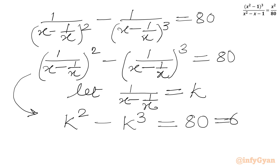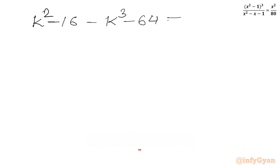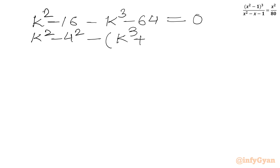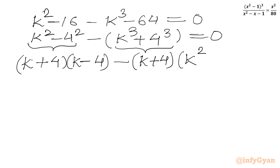I can split 8 as 4 plus... taking all terms to one side, I can write k squared minus 16 minus k cubed minus 64 equal to 0, which gives k squared minus 4 squared, minus the bracket k cubed plus 4 cubed, equal to 0. Now we apply two formulas: a squared minus b squared and a cubed plus b cubed. So I can write k plus 4 times k minus 4, minus k plus 4 times k squared minus 4k plus 16, equal to 0.